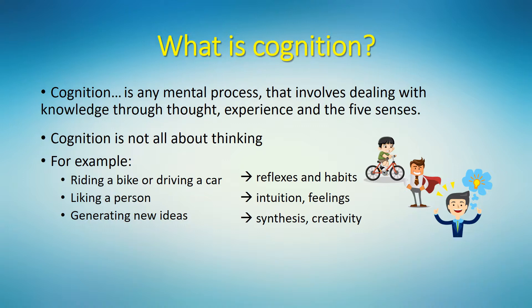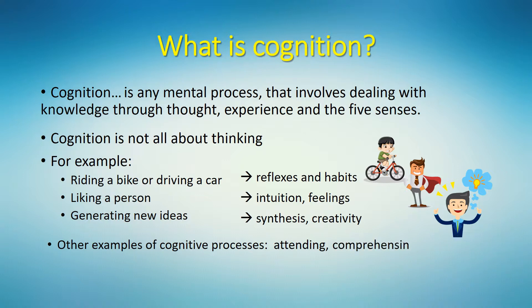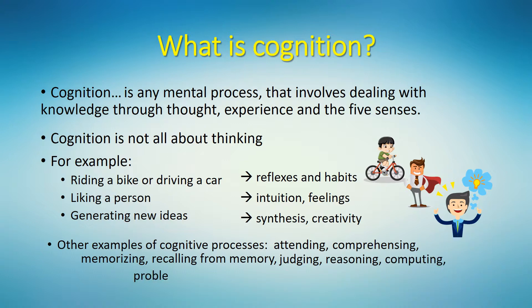So, as you can see, the notion of cognition includes in itself many specific cognitive processes. For example, paying attention, or attending to something, is cognition. But also comprehending — or put simply, figuring out something. Memorizing information as well as recalling information from memory are two different cognitive processes. Judging, reasoning, computing, problem solving, deciding, verbalizing something — for example thoughts or feelings — all of that are cognitive processes. All of that is cognition.